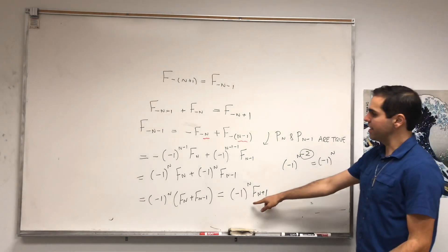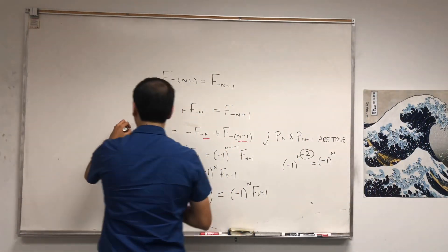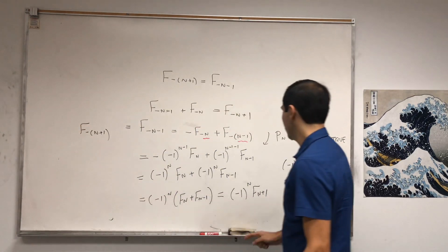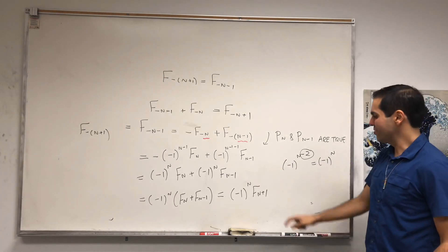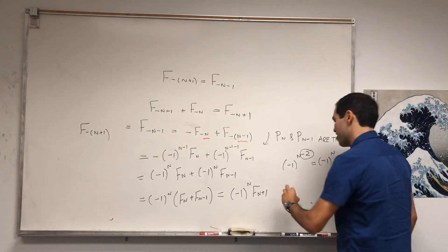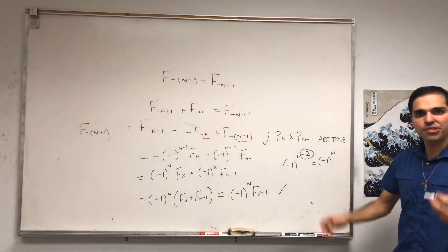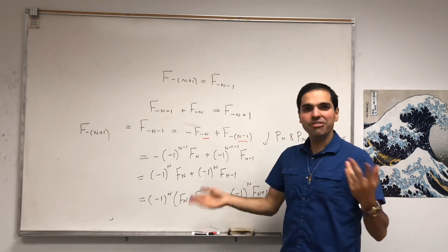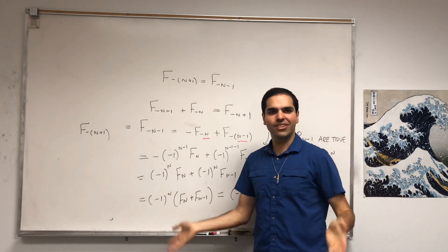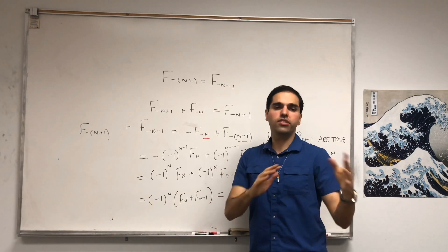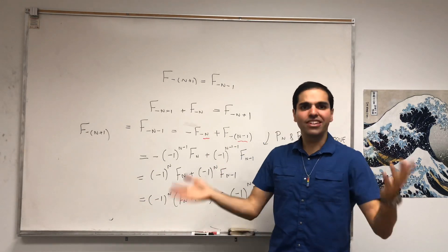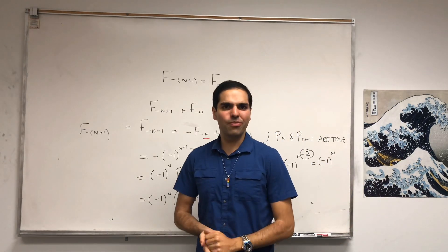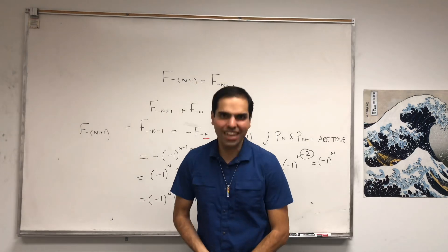So we're done, because this gives F of minus (n+1) equals minus 1 to the n times F(n+1), and therefore P(n+1) is true. At the end, we get P(n) is true for all n. This is a very interesting relationship for the Fibonacci sequence: if you go backwards, you get this alternating sequence. I hope you liked this — if you want to see more math, please make sure to subscribe to my channel. Thank you very much.